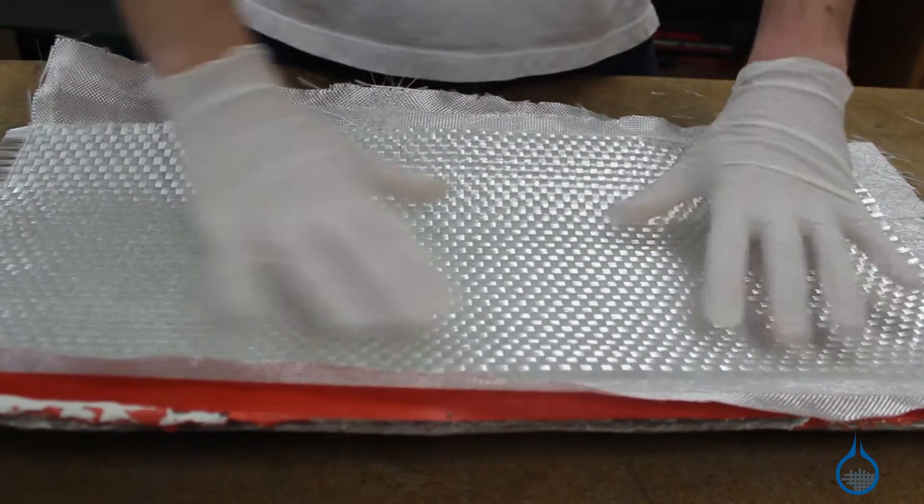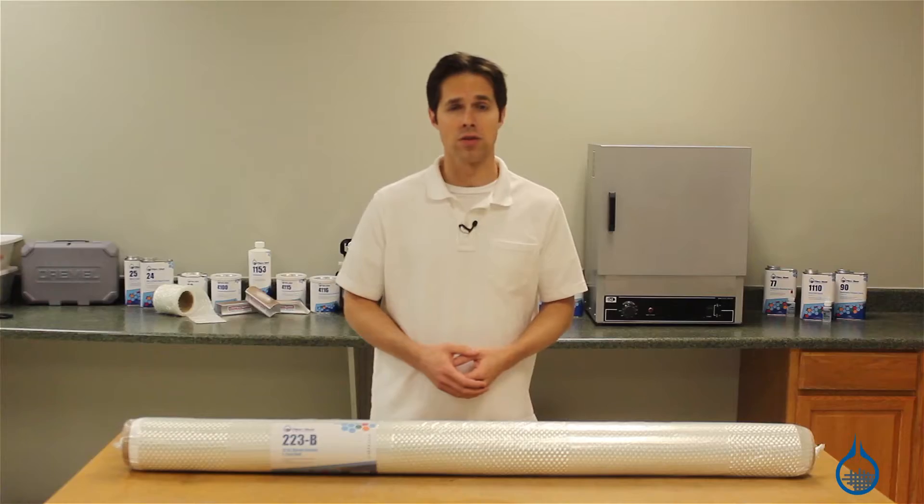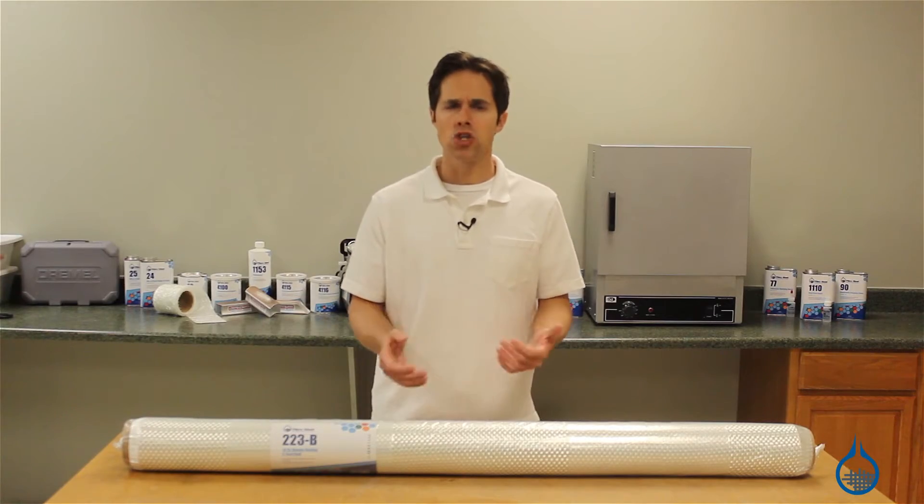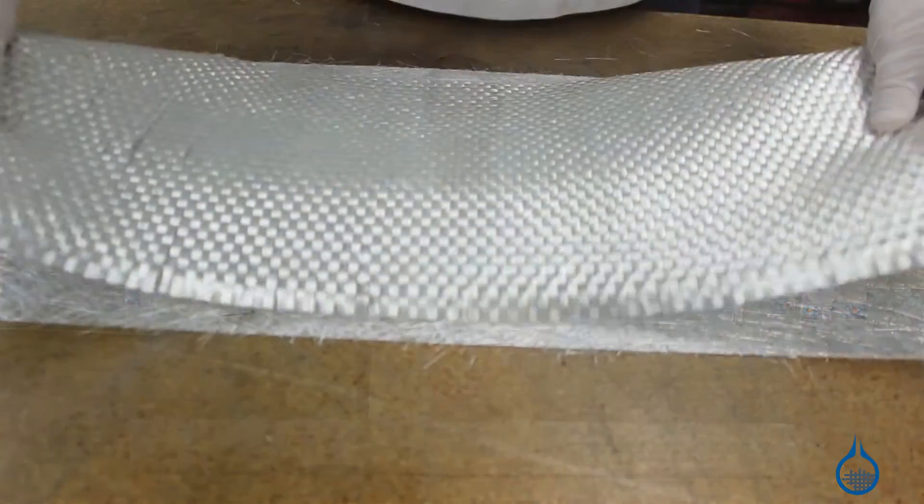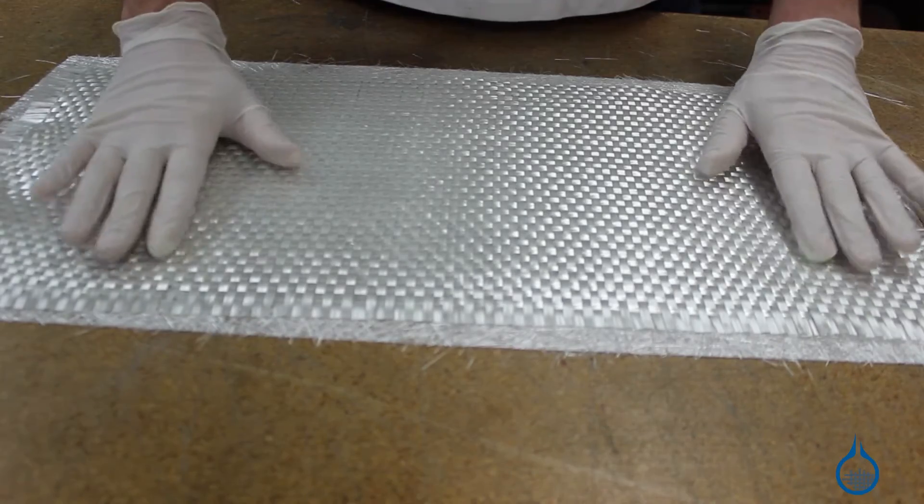Woven roving is often used to reinforce other materials. In this specific case, it should be used with a chopped strand mat and either a polyester or vinyl ester resin.